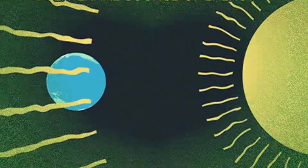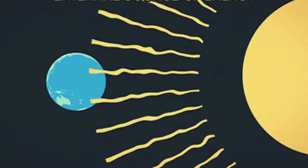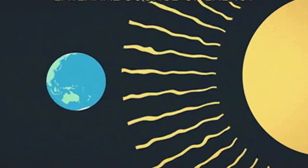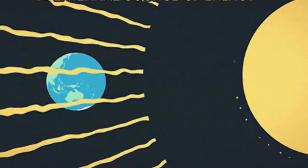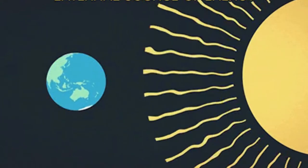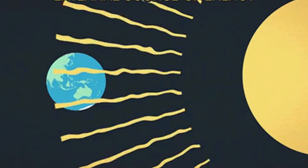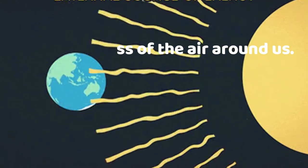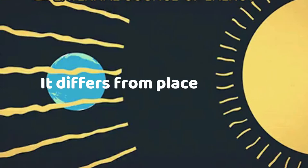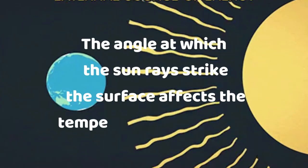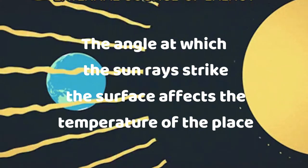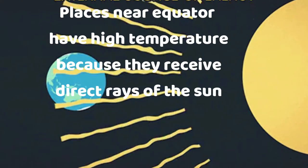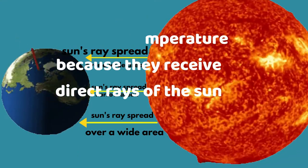Temperature: Air temperature has a direct influence on fire behavior because of heat. Heat from the sun is transferred to the Earth by radiation. The heat warms up the surface of the Earth, and the atmosphere close to the surface is in turn warmed by heat reflecting from the surface. This is why temperature above the surface is cooler than the surface of the Earth. Temperature is the hotness and coldness of the air around us, and it differs from place to place. Places near the equator have high temperature because they receive direct rays of the sun.